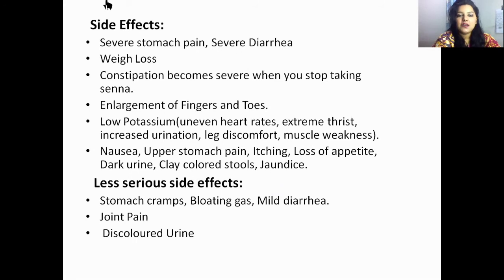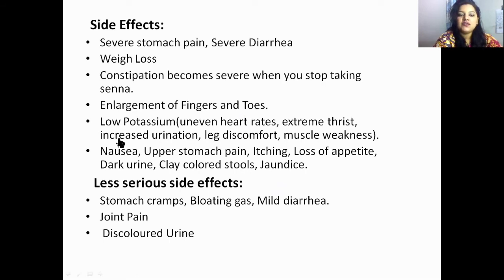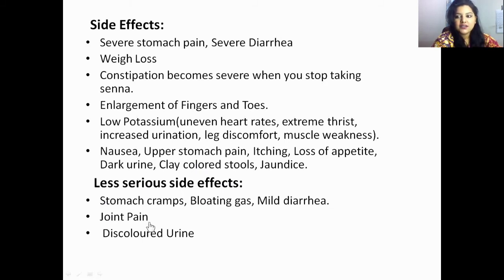Side effects include: severe stomach pain, severe diarrhea, weight loss, constipation after stopping Senna, enlargement of fingers and toes, low potassium, uneven heart rate, extreme thirst, increased urination, leg discomfort, muscle weakness, nausea, upper stomach pain, itching, loss of appetite, dark urine, and clay-colored stools. Less serious side effects are: stomach cramps, bloating, gas, mild diarrhea, joint pain, and discolored urine.